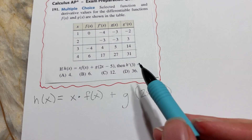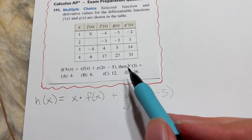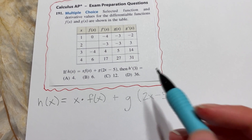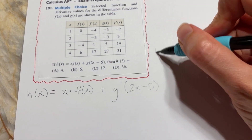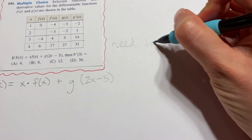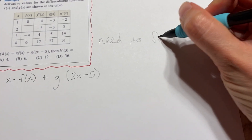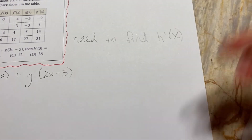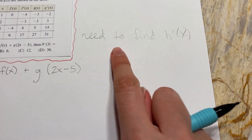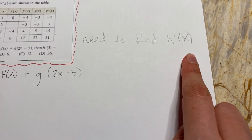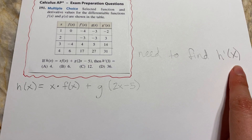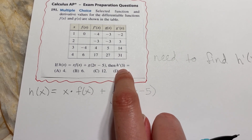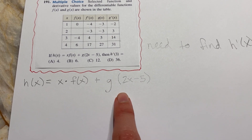Since you're being asked about h'(3), that means you need to find h'(x) first — you need the general formula for the derivative — and then once you find h'(x) you'll be able to plug in 3 to that formula.